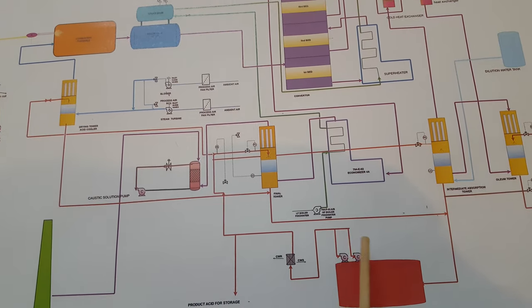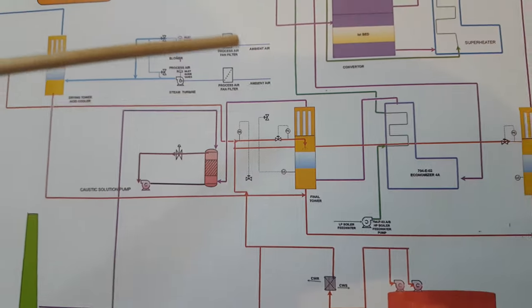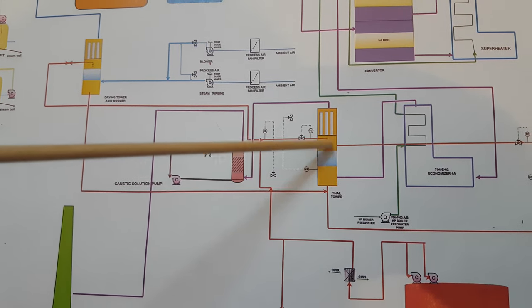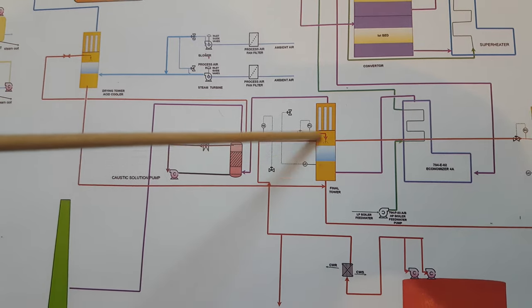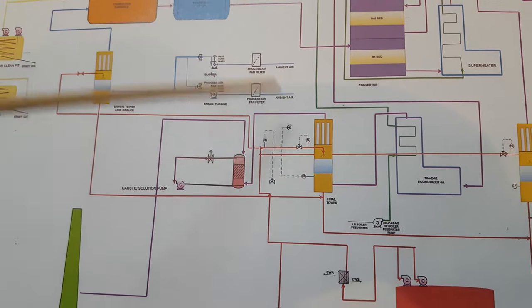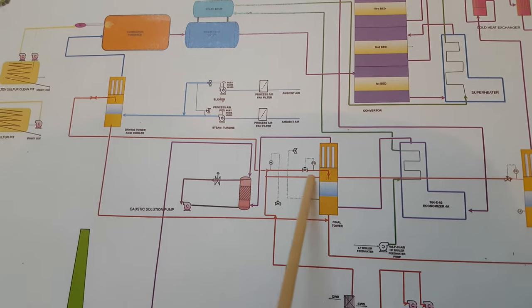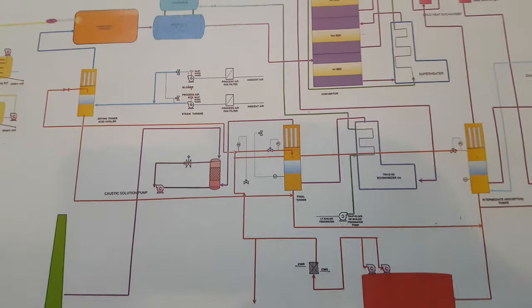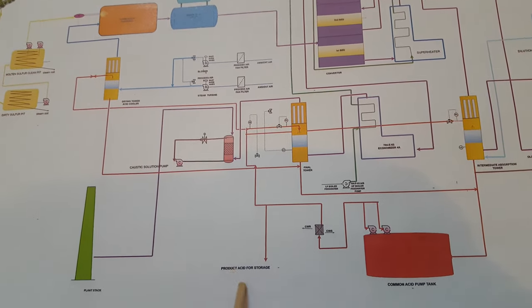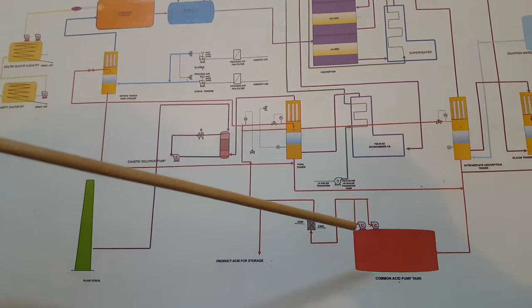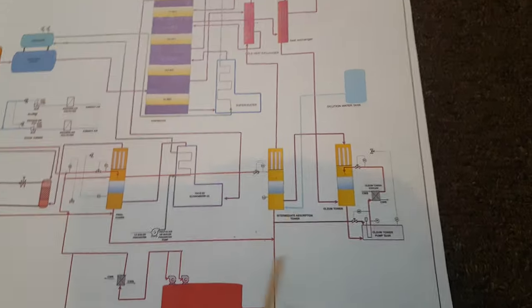When sulfur trioxide reacts with sulfuric acid it releases heat, so we use a plate type heat exchanger to remove the heat. From here acid gets circulated to the different towers. In the final absorption tower, sulfuric acid is circulated from the top and gas goes from the bottom — sulfur trioxide contacts sulfuric acid and concentration increases. When concentration of sulfuric acid increases, we add dilution water to reduce the concentration. Continuously, when we add water the level increases, and whatever level increase occurs we send that to the product acid storage tank.